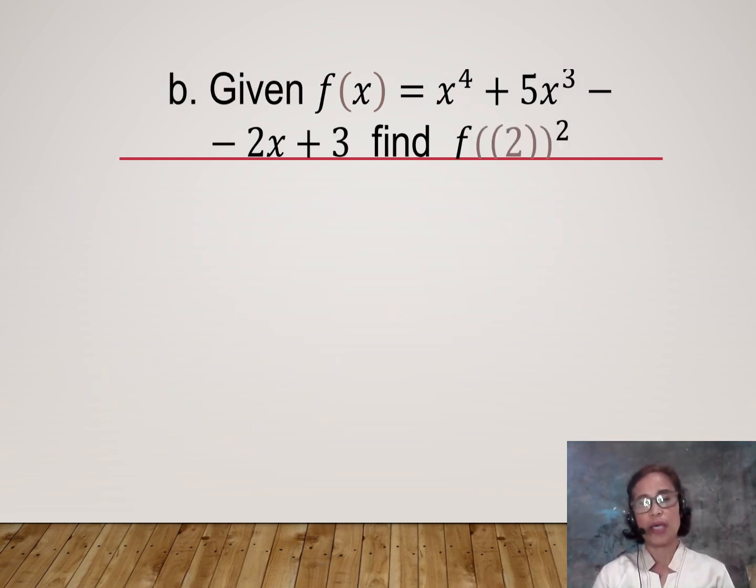Given f(x) = x^4 + 5x^3 - 2x + 3, find f(2) raised to the second power. We have to solve first f(2), then the value of f(2) will be squared so that we can get f(2) squared.